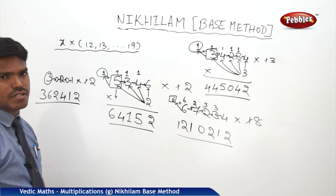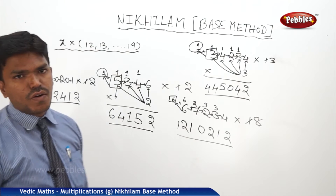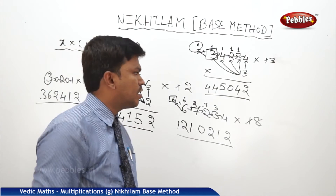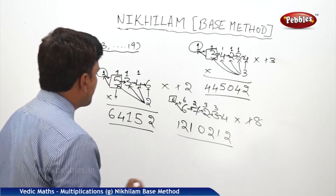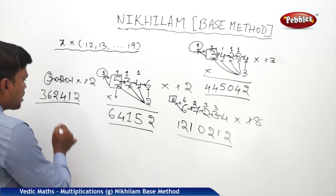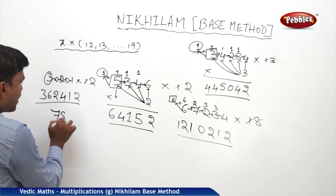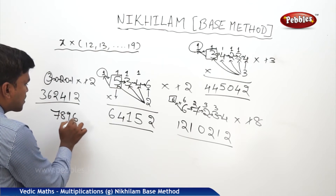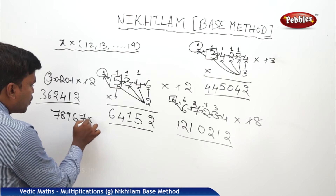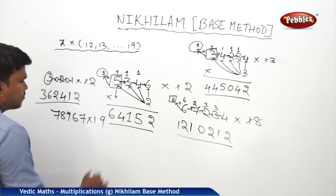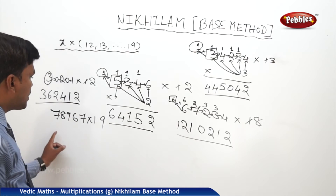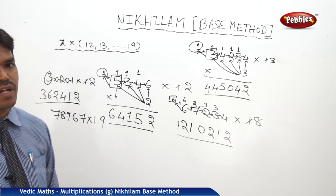Last step: drop leftmost digit 3 as it is. Before dropping, is there any carry? No, this time there is no carry. So simply drop 3 as it is. This will be your answer.